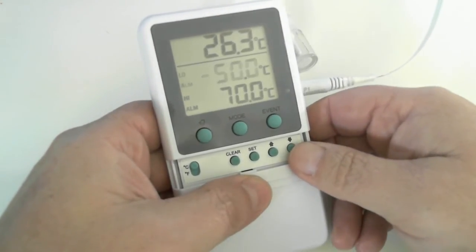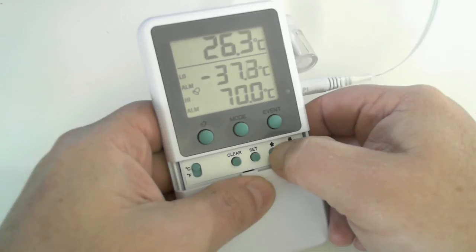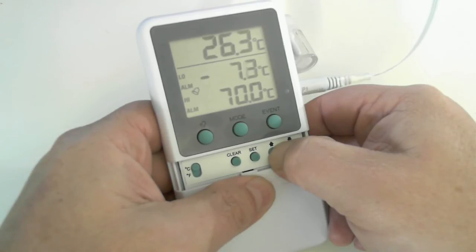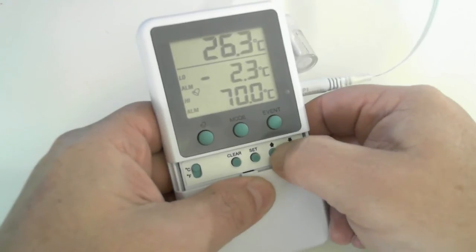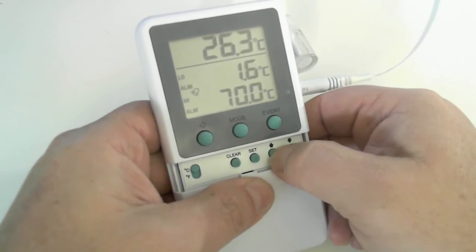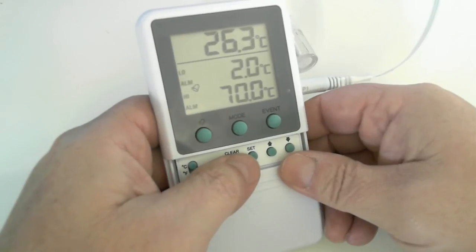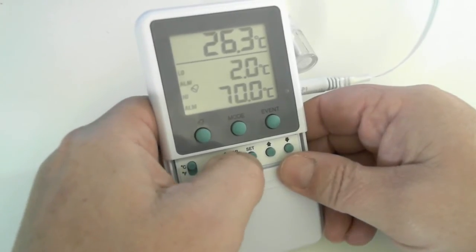Our low settings are flashing. So let's go up to 2 degrees C. And we can move in 1 degree increments. Let's hit set.